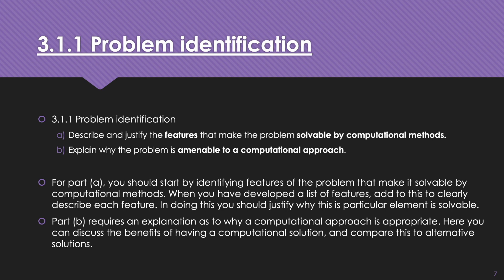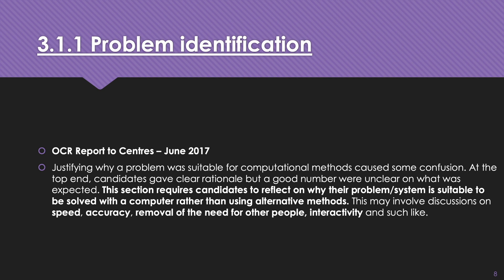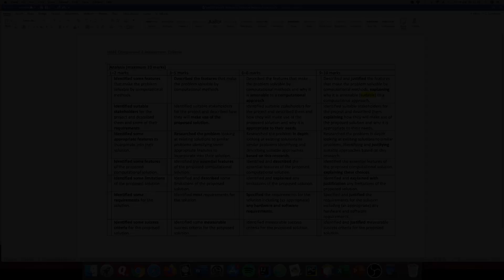Part B requires an explanation as to why a computational approach is appropriate to solving your problem. In other words, if somebody comes to you with a problem — for example, a computer booking facility for booking computers in school — you need to say that a computer solution gives benefits compared to using some other method like a notepad. The OCR report for June 2017 highlighted that this section requires candidates to reflect on why their problem is suitable to be solved by a computer rather than alternate methods, involving discussions such as speed, accuracy, removal of the need for people, interactivity, and so on.